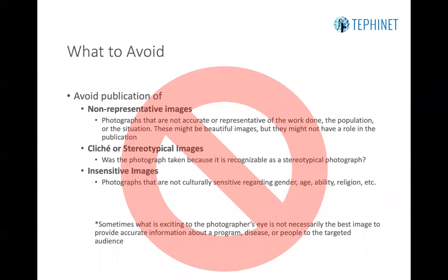Now that you've asked yourself those questions, we have to think through a couple of things to avoid. In general, one wants to avoid the publication of non-representative images — photographs that are not accurate or representative of the work done, the population, or the situation. These might be beautiful or interesting images, but they might not have a role in the intended publication. Further, one wants to avoid cliché or stereotypical images. One of perhaps the best examples of this is the fly-eyed child photograph, common in the 1980s and 1990s. Sometimes people will go into the field and take those photographs because they are recognizable, but the question is whether that is representative of FETP work or of the situation writ large, or whether it's taken simply because it's stereotypical and recognizable.